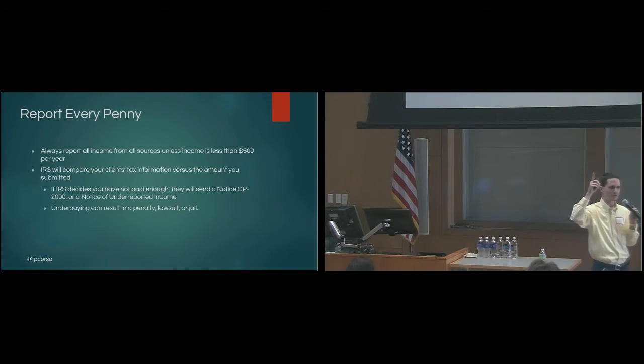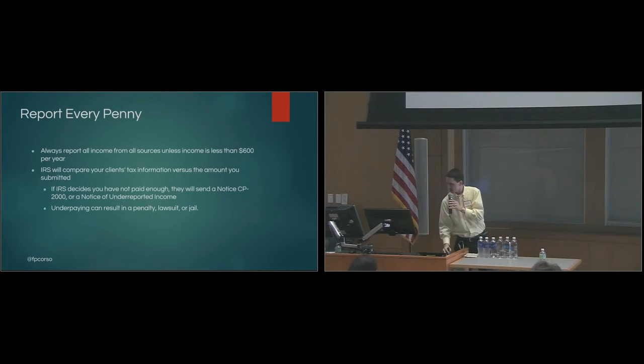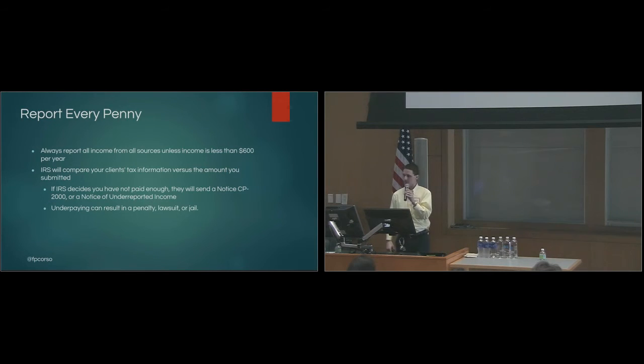And then because IRS will actually compare your client's tax information, so those that collected your W-9 and they're sending out 1099s, the IRS is going to check all that and be like, wait, company A paid Joe $1,000 or $10,000 and it's not lining up over here. So the IRS can actually send you something called a notice CP2000, which is a notice of underreported income, and they will send you that. If they catch you, they will send you that document and it can lead to penalty, lawsuit, or jail. So it's not fun. Don't go down that route. Don't try to go around the IRS.